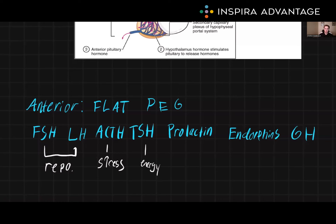Next up we have prolactin, which stimulates milk production in lactating women. It is also involved in the regulation of various other physiological processes, such as immune function, endocrine function, and behavior.